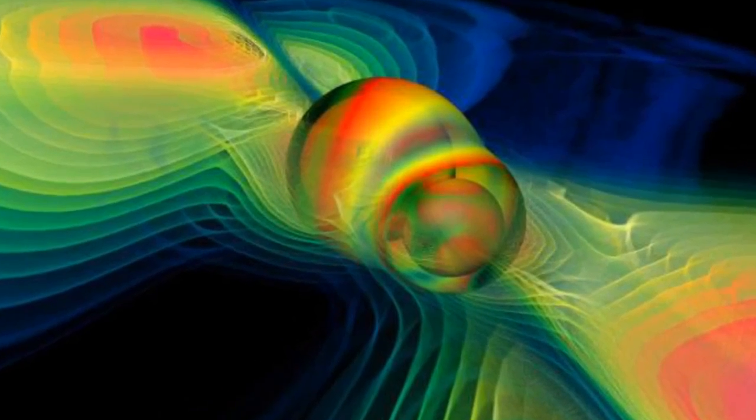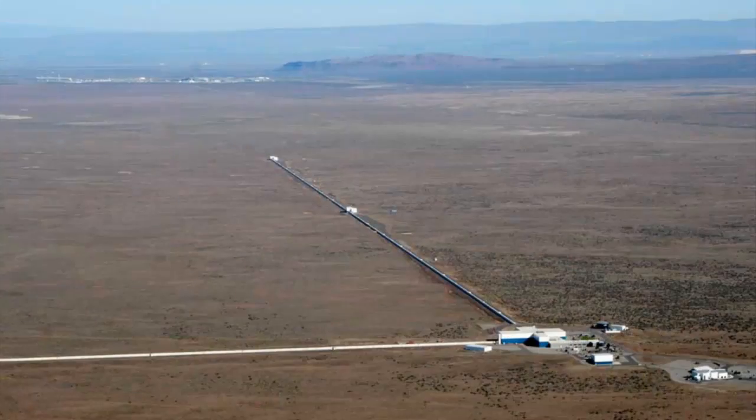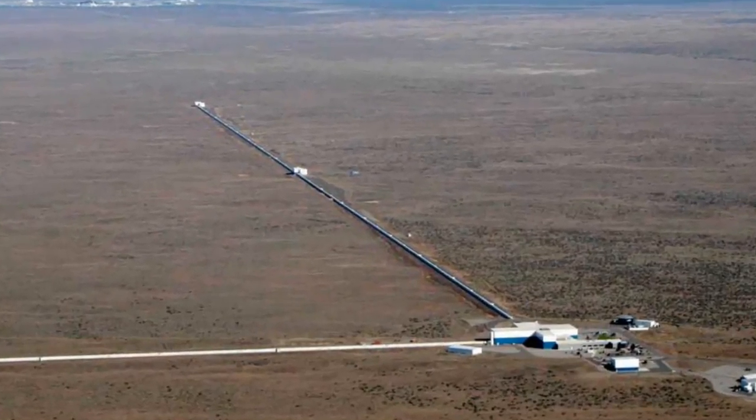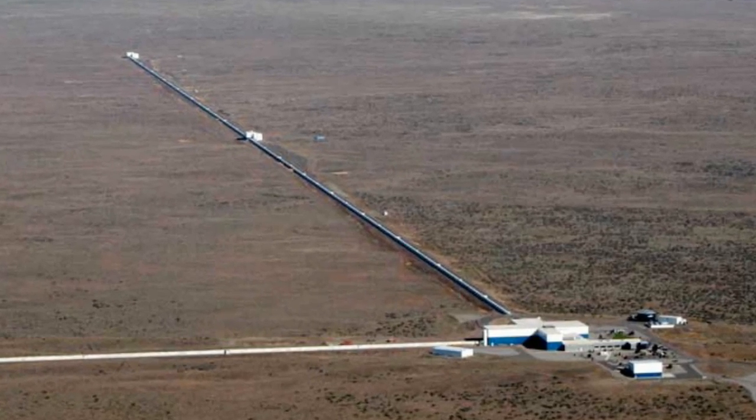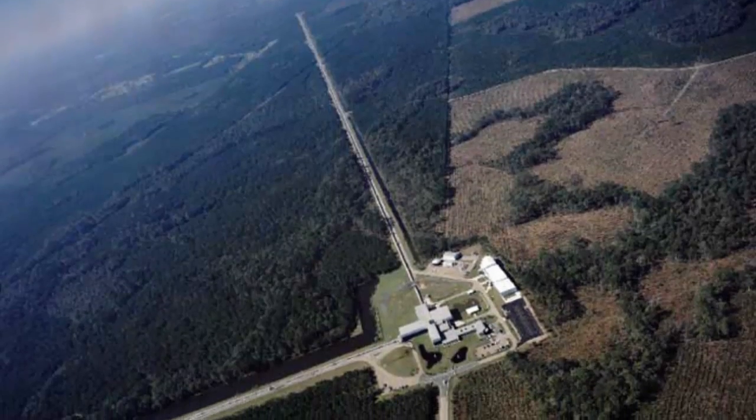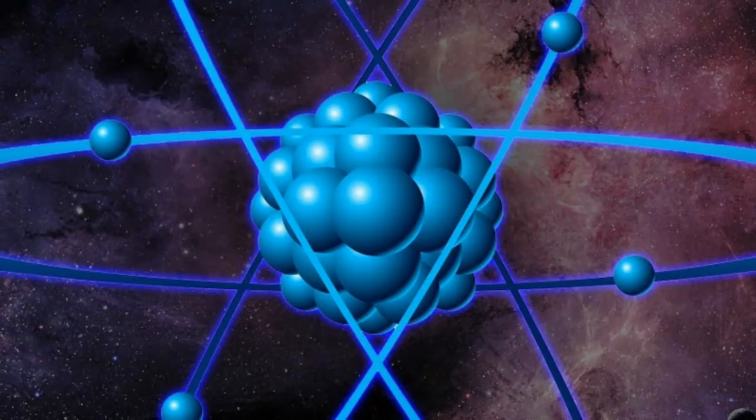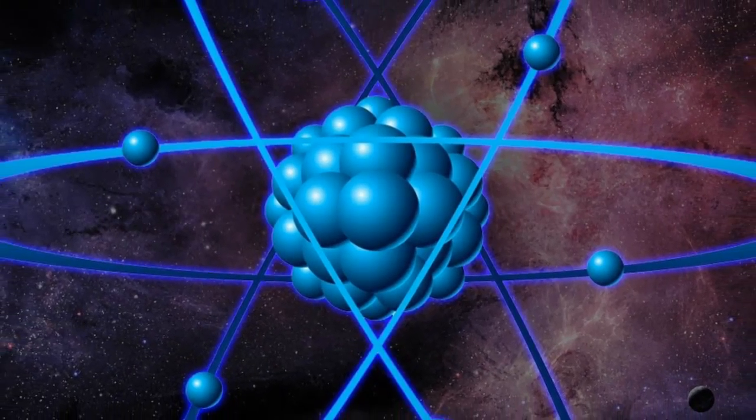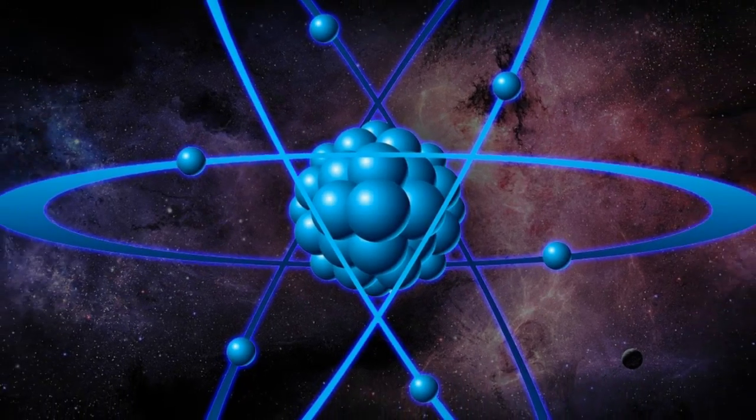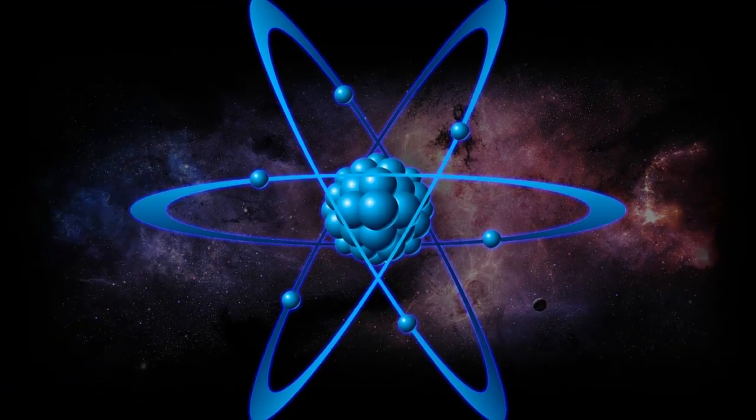This experiment, the LIGO experiment, uses a laser beam that bounces back and forth between mirrors. The mirrors are four kilometers or about two and a half miles apart. The total distance between the mirrors wiggles by less than one thousandth of the nucleus of an atom. So it's a very tiny effect, and it's an amazing fact that they've been able to produce methods that can detect such a small variation.